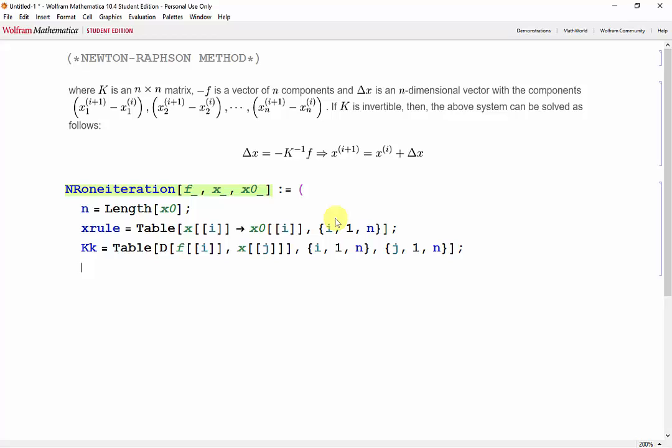Finally, we can do our calculation for delta. So delta is going to be the negative inverse of kk. And we can just use a period for element-wise multiplication. And now this is where our xrule comes in handy. And then we want to output delta.